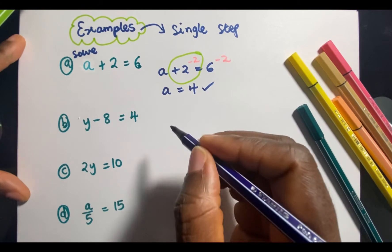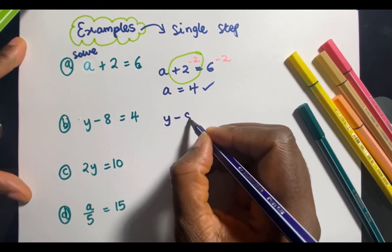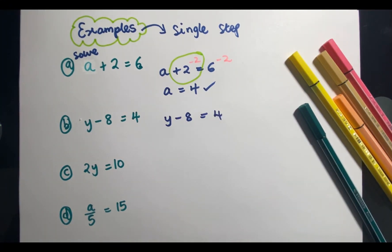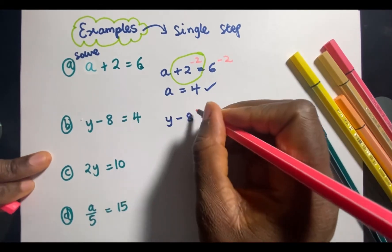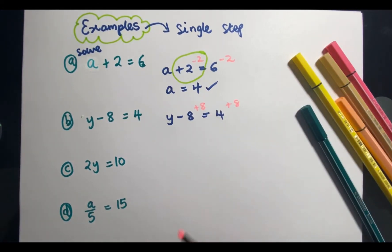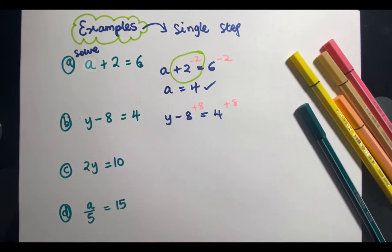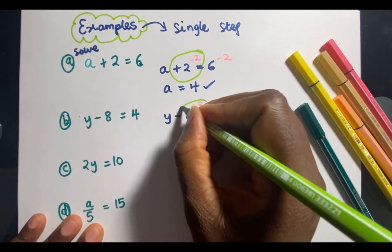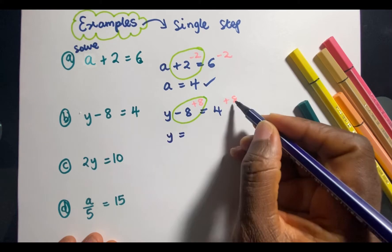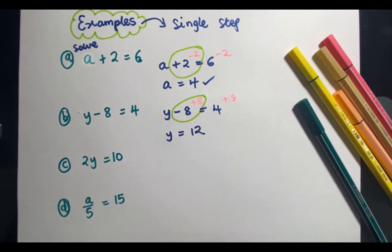For the next problem we have y - 8 = 4. I have a minus 8, so I can add 8 to both sides because I want to find y. Adding 8 to both sides, the minus 8 plus 8 becomes 0, and therefore y would be equal to 8 plus 4, which is 12.